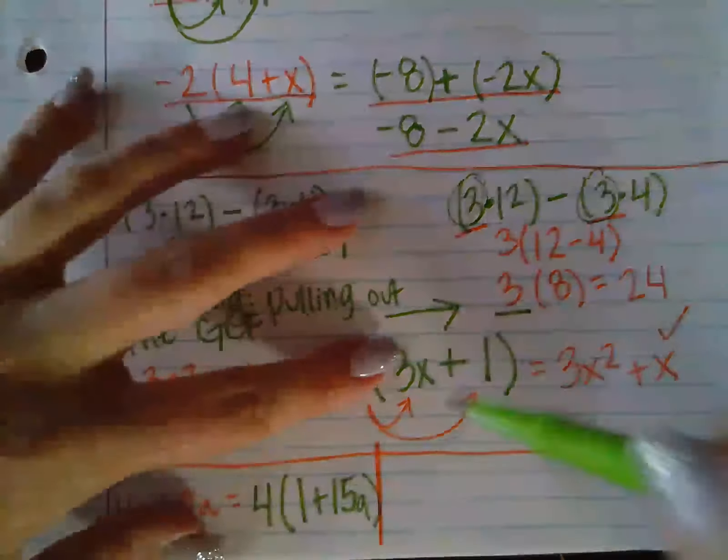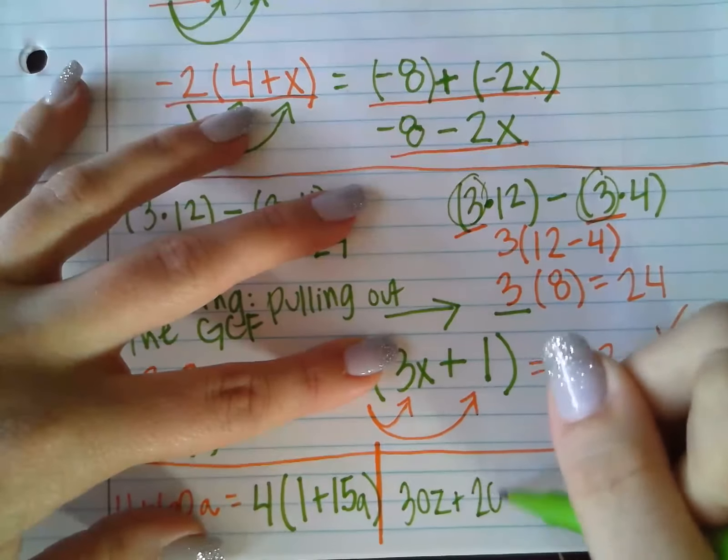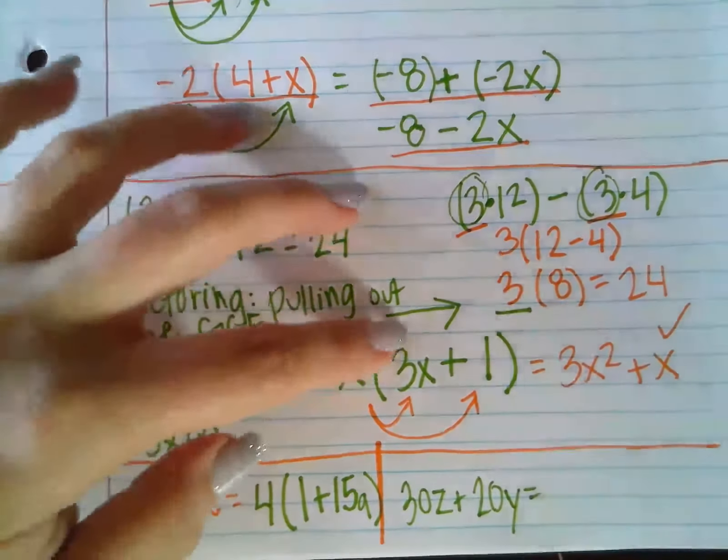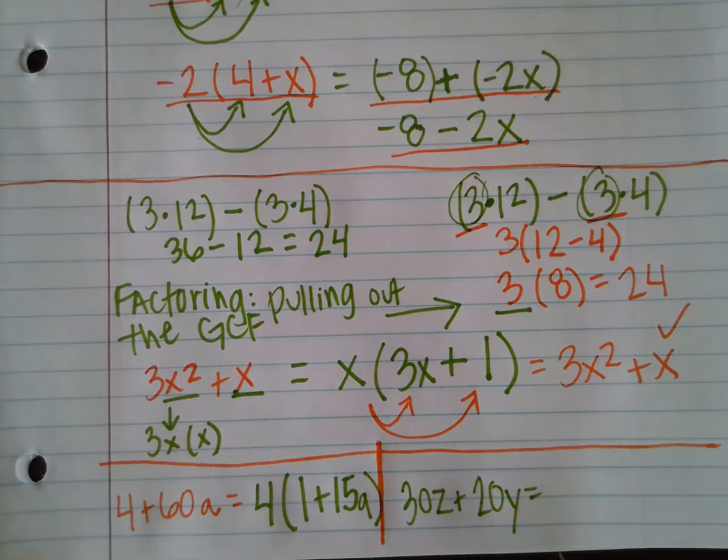Let's look at one more example. This one, we're going to do 30Z plus 20Y. Maybe pause the video for a second and see if you can do this one yourself and then unpause it or hit play again and see if you came up with the right answer.